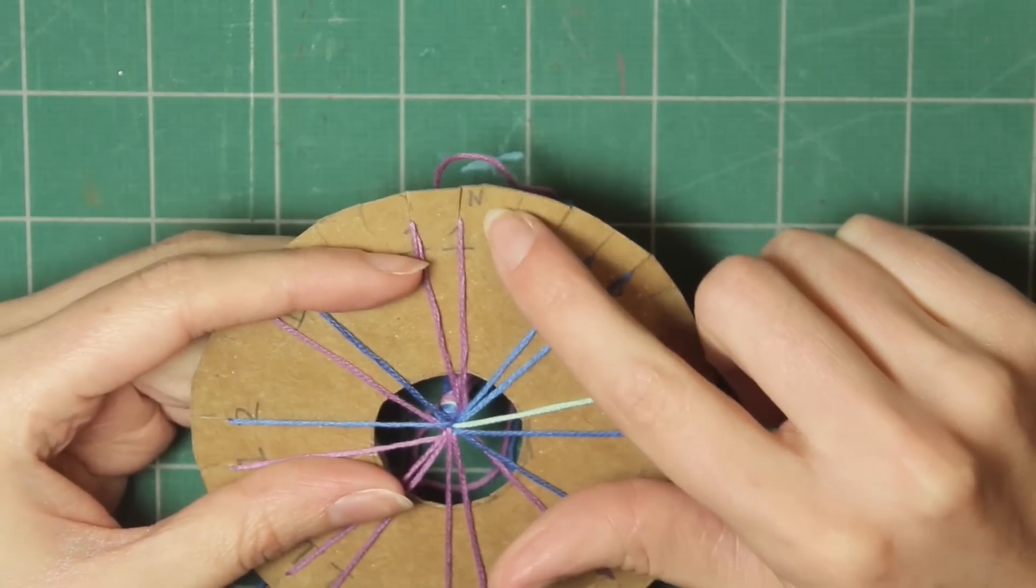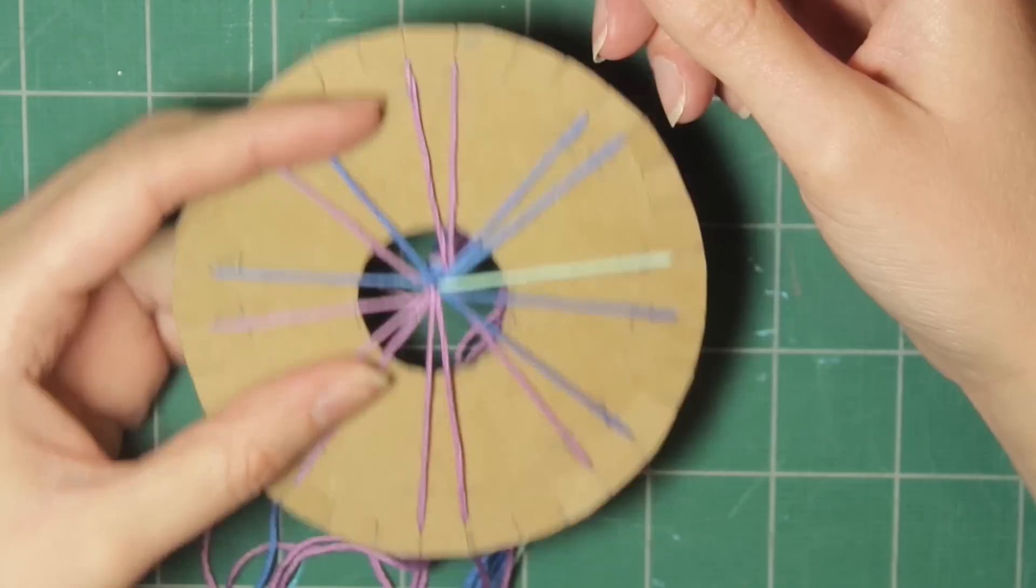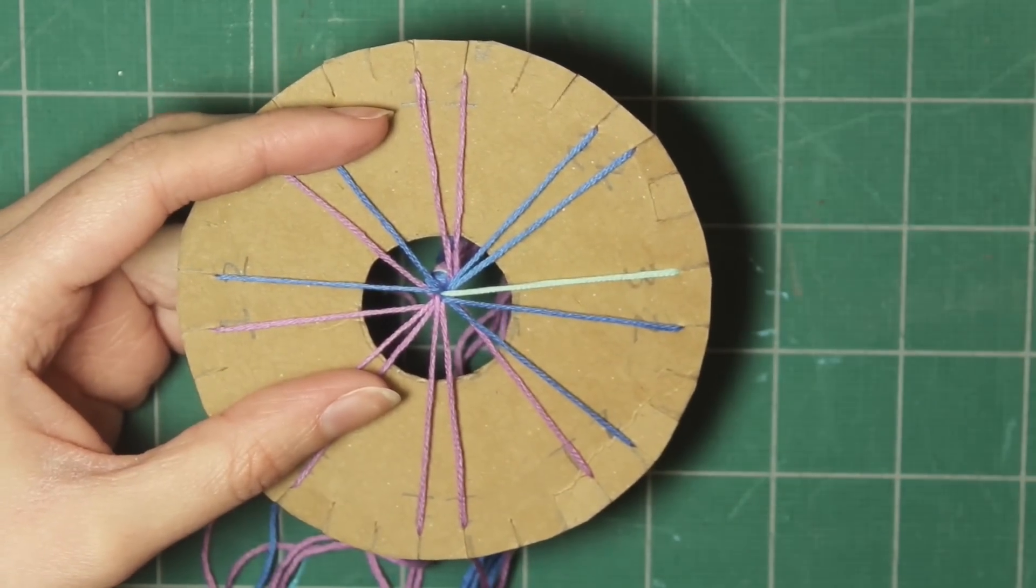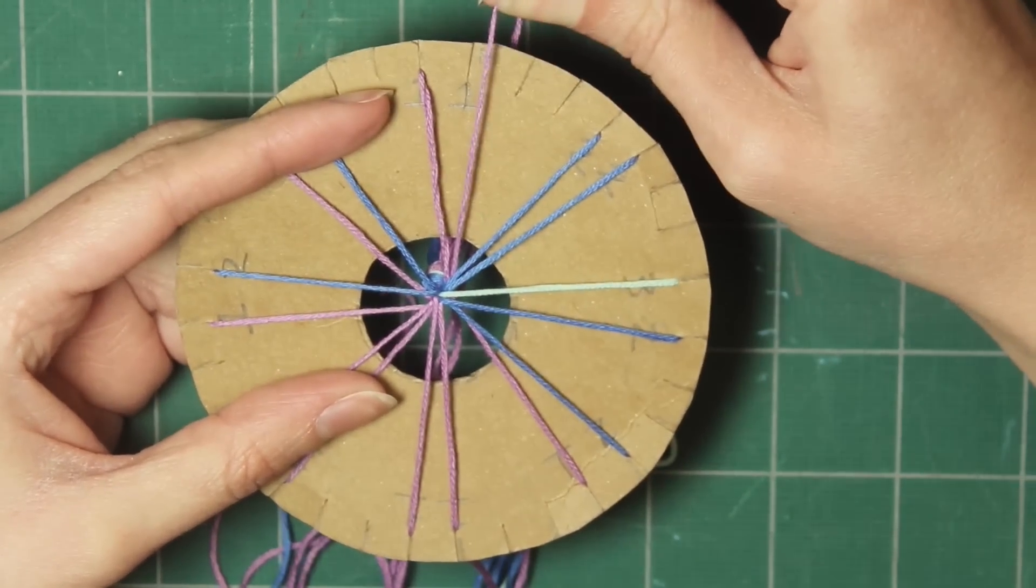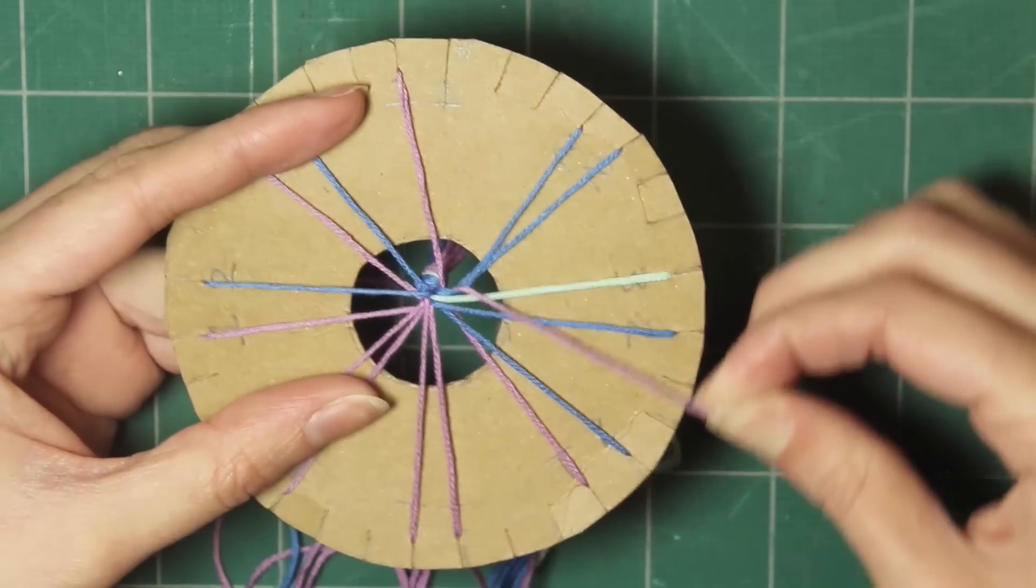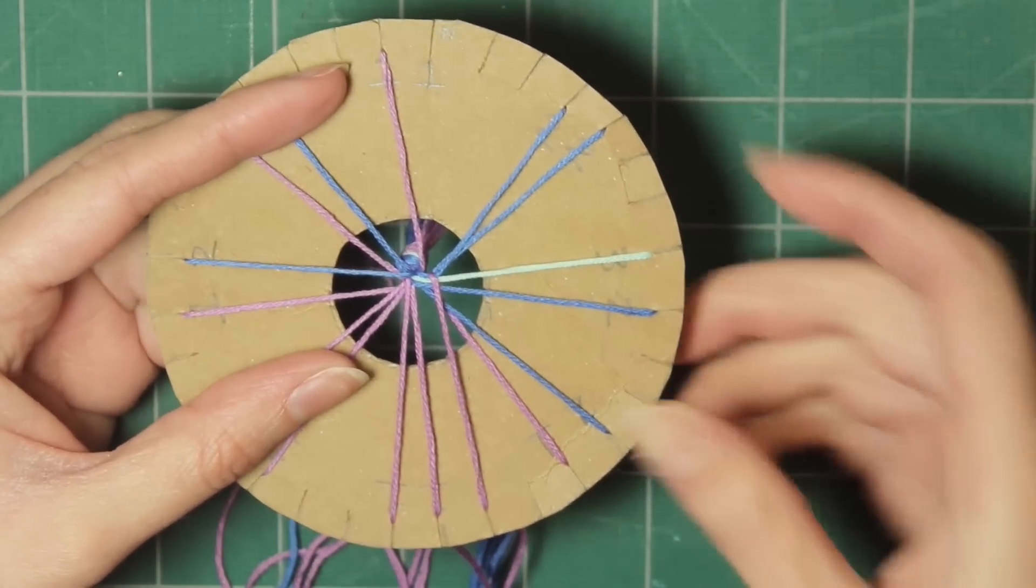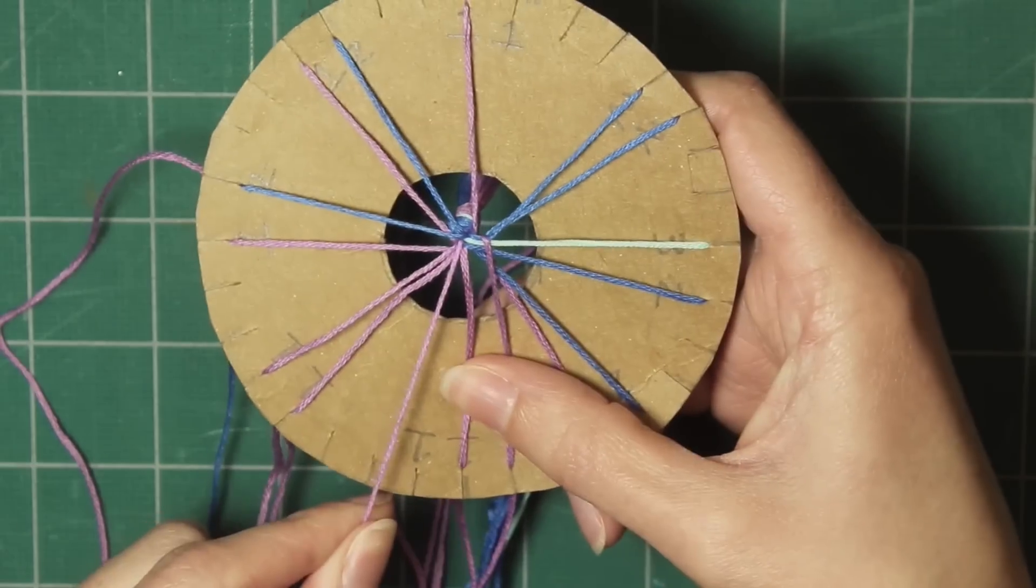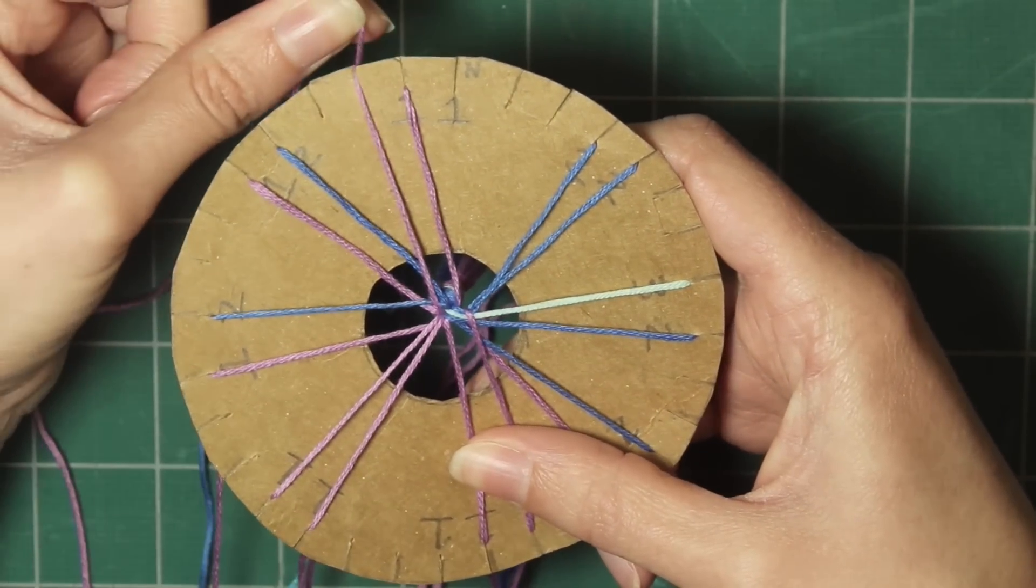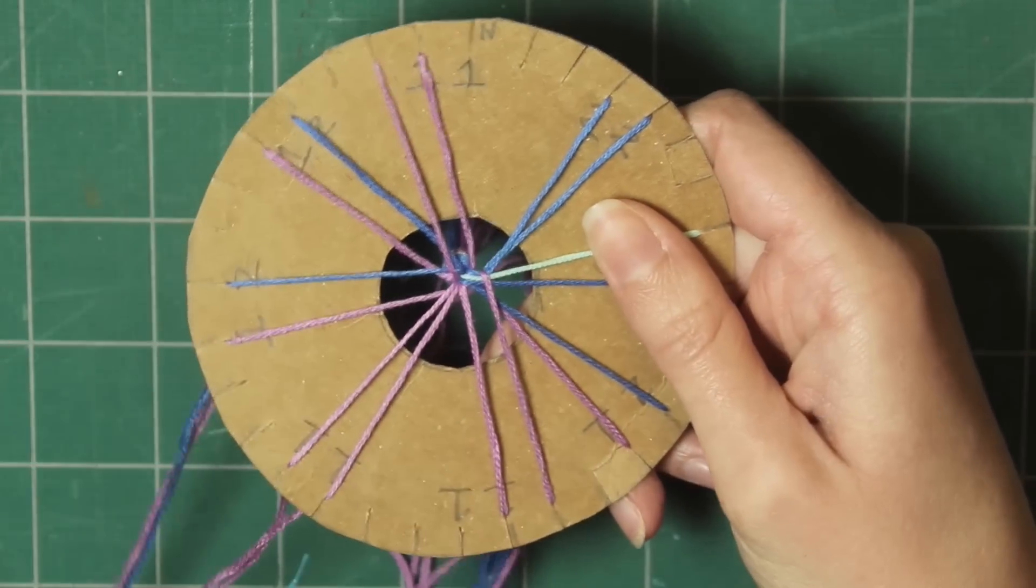So turn the wheel so the end is at the very top. And in these two strands that are at the top, take the right strand, move it clockwise around the wheel, and put it in one slot to the right of the bottom pair. Then grab the left strand in this bottom pair and move it clockwise to the top and put it one slot to the left of the top strand.